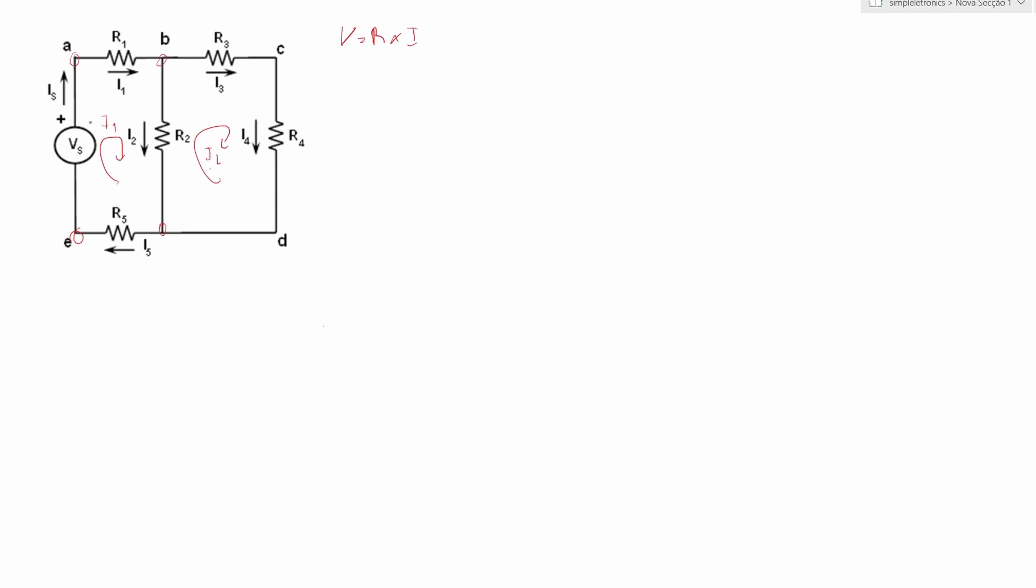We know that here we have a voltage applied. So Vs plus R1 I1, that is the voltage in here, in R1, plus I1 minus I2, because I1 is going down here, right here. I1 is going down and I2 is going up. So I1 minus I2 multiplied by R2 plus I1 multiplied by R5 is equal to 0. Understand?